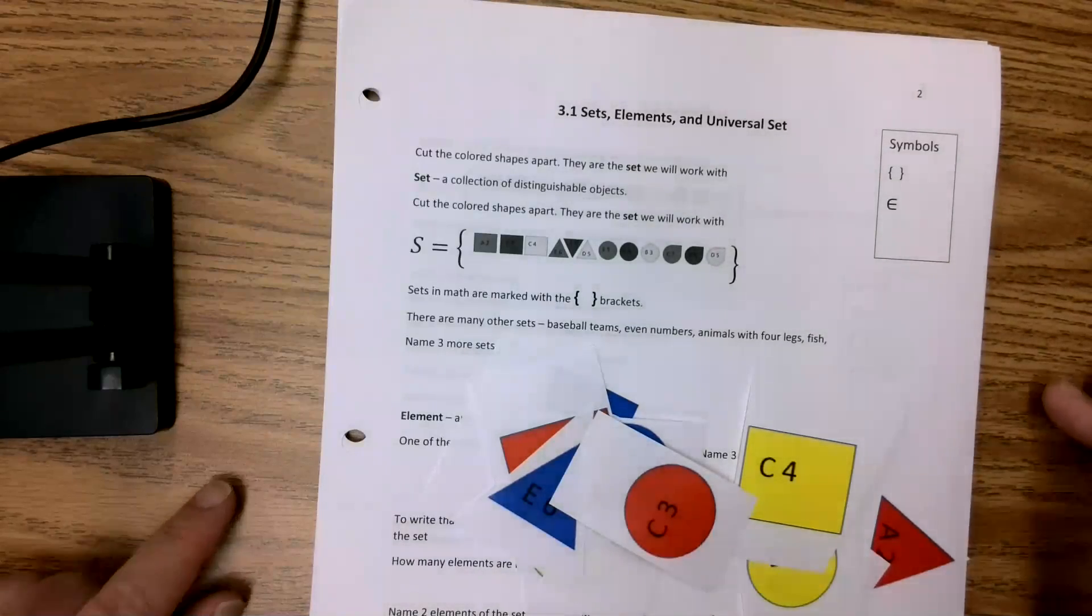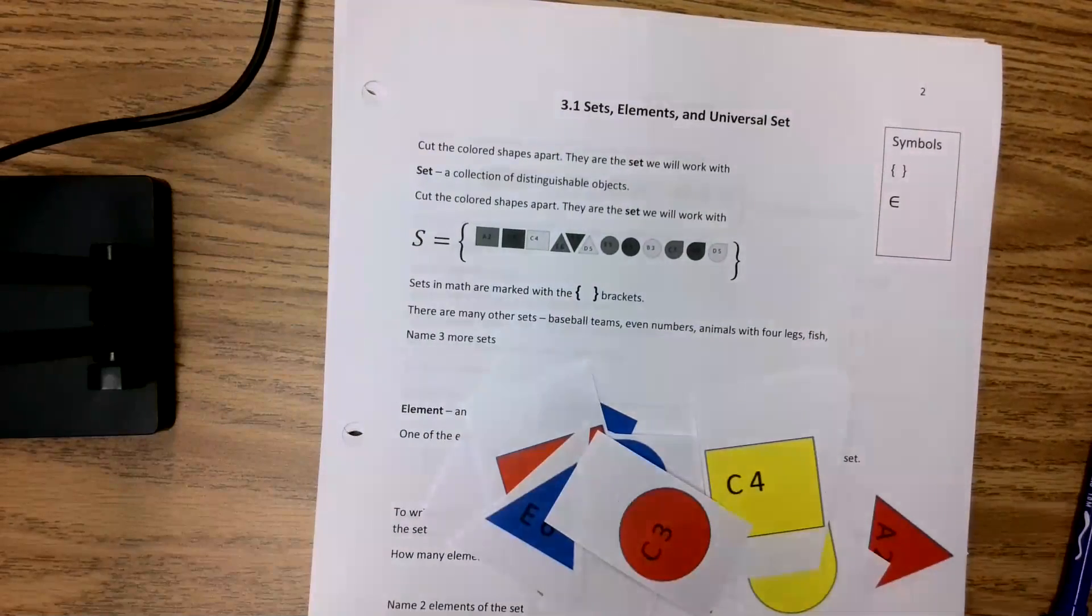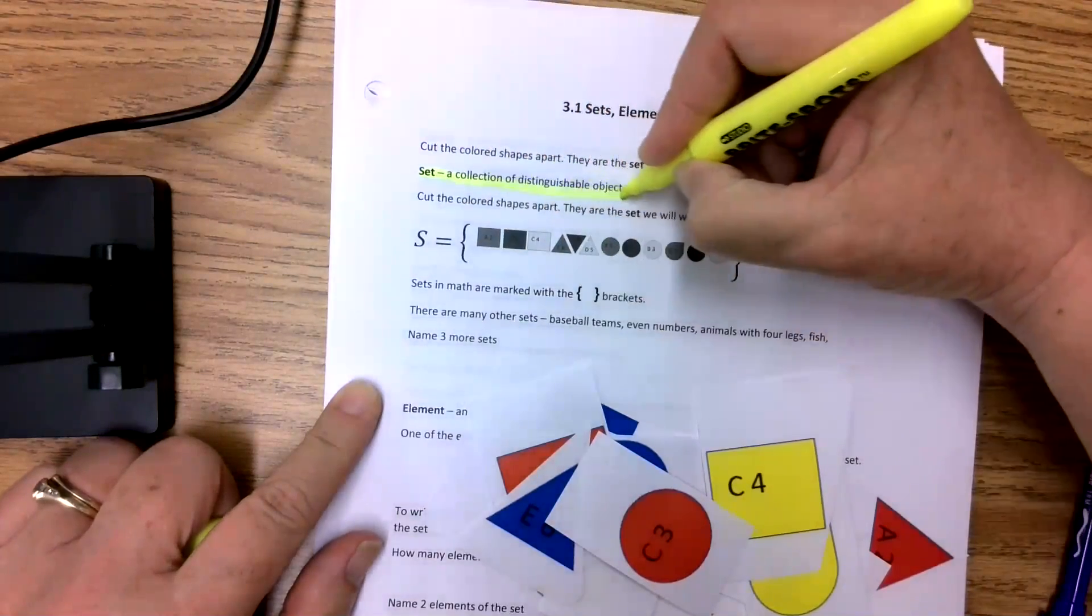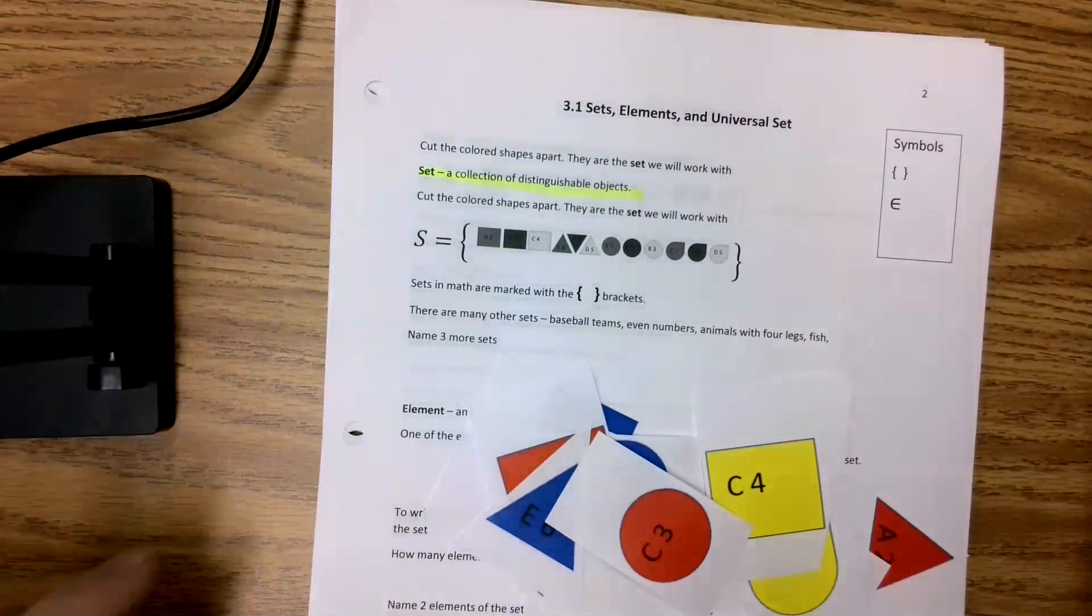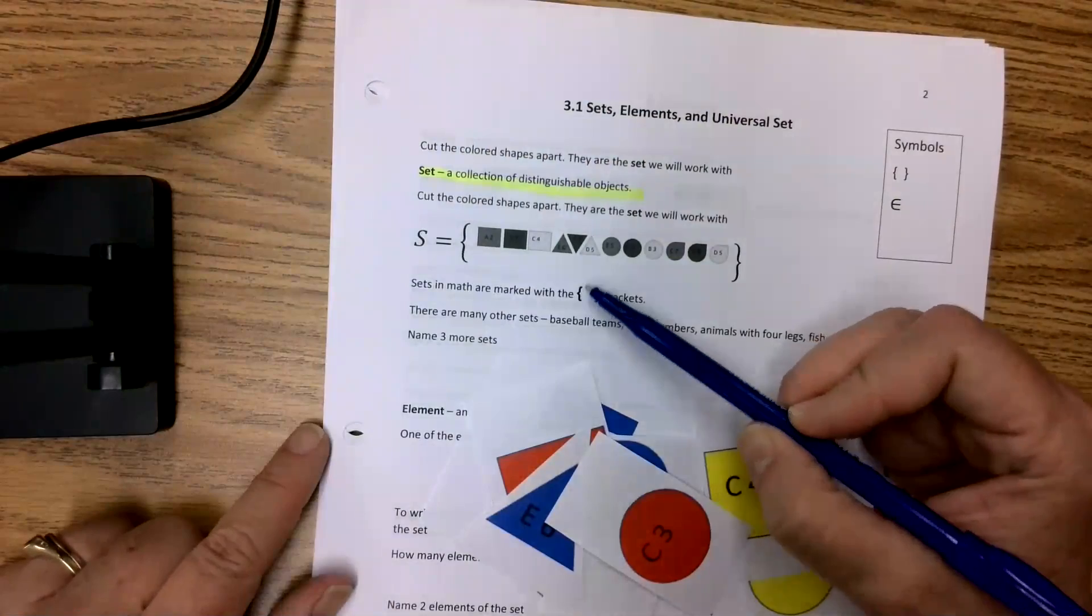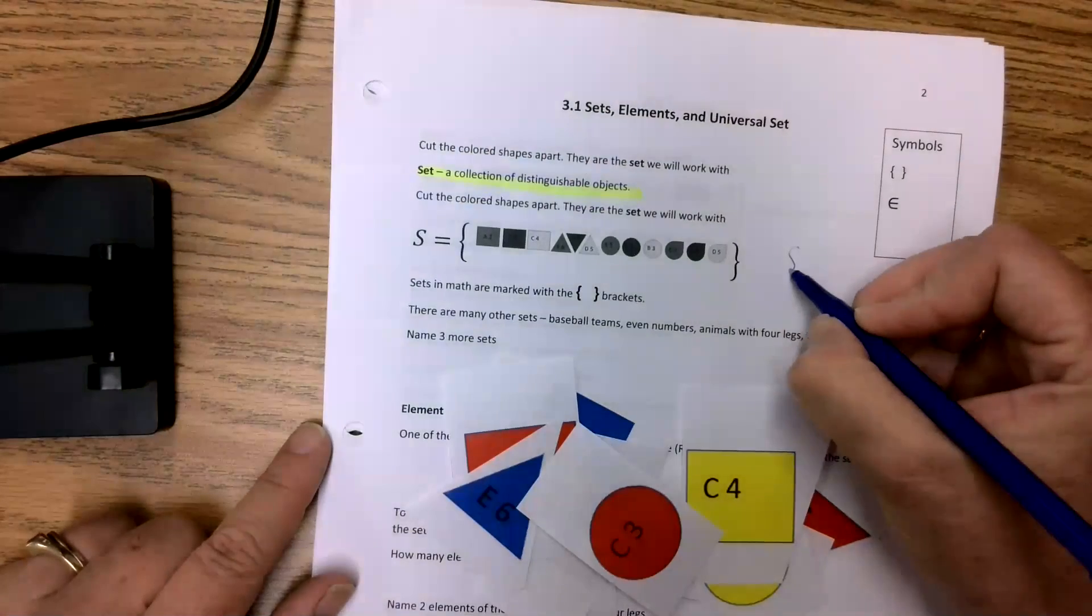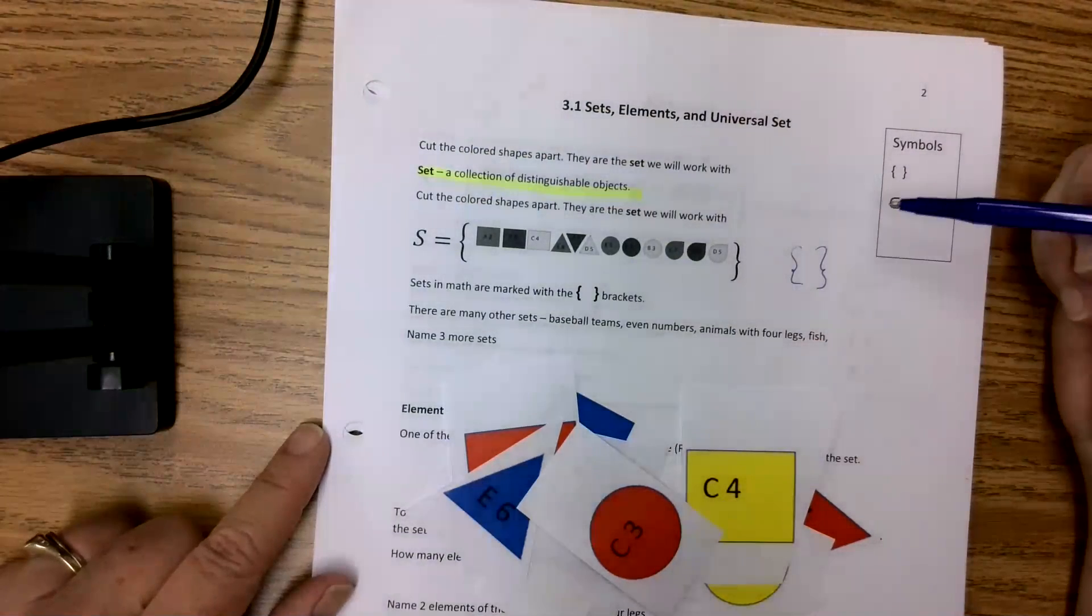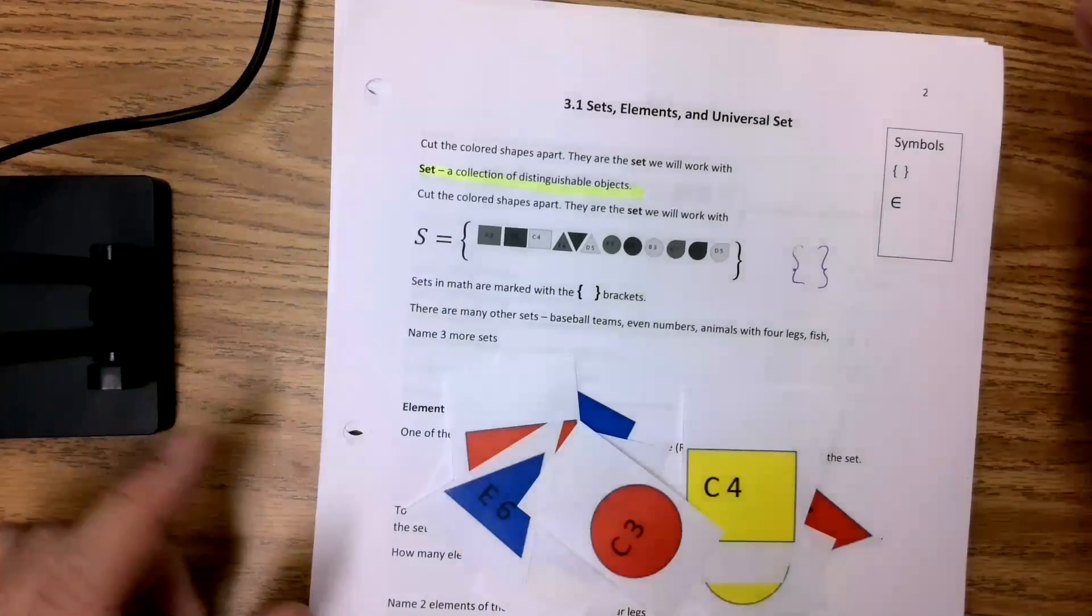So cut out the shapes, check. So here's our first definition: set is a collection of distinguishable objects. I just realized I'm repeating myself there, so probably on your copy you won't have that written out twice. So here's our set. Now when you're talking about sets in math, they are marked with these cool brackets. And those are called set notation brackets.